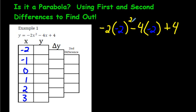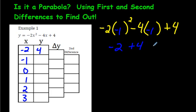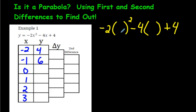Using BEDMAS: negative 2 squared is 4. 4 times negative 2 is negative 8. Negative 4 times negative 2 is positive 8. These two cancel, and we're left with 4. For negative 1: negative 1 squared is 1; 1 times negative 2 is negative 2; these two multiplied make positive 4; so negative 2 plus 8 gives 6. For 0: 0 times anything is 0, and we're left with just 4.